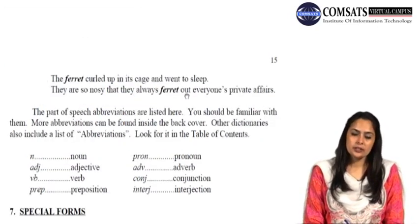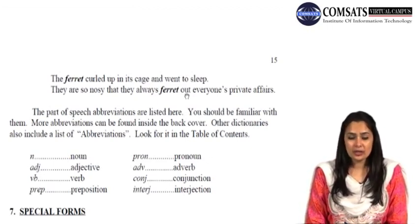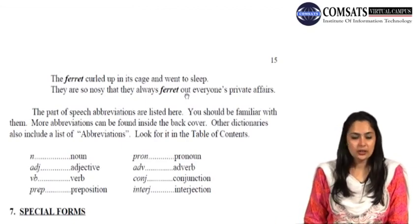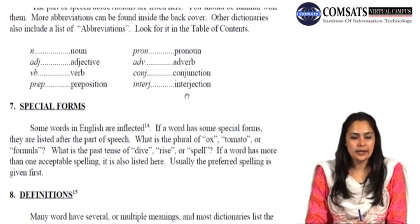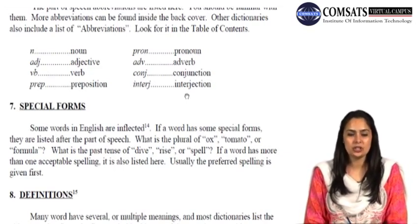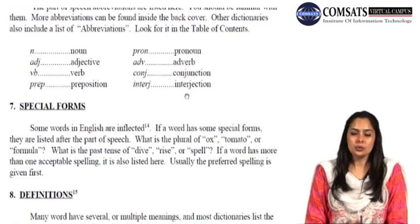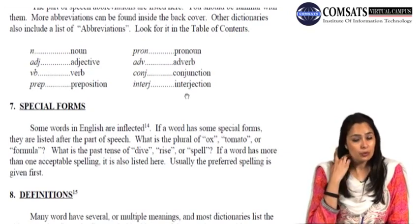The seventh very important entry is special forms. Some words in English are inflected — if a word has special forms, they are listed after the part of speech. What is the plural of ox, tomato, or formula? What is the past tense of dive, rise, or spell? If a word has more than one acceptable spelling, it is also listed here, with the preferred spelling given first. These special forms mean that words are in a different form than regular words — for example, the plural of 'ox' is 'oxen,' not just adding 'es' or 's.' That's why it is a special form and is written or mentioned separately in the dictionary.